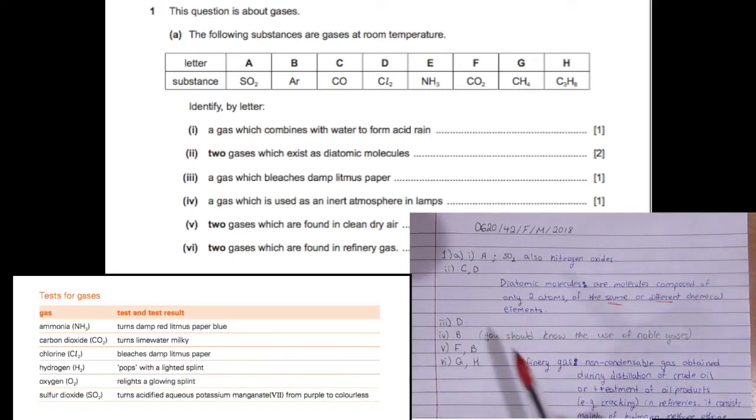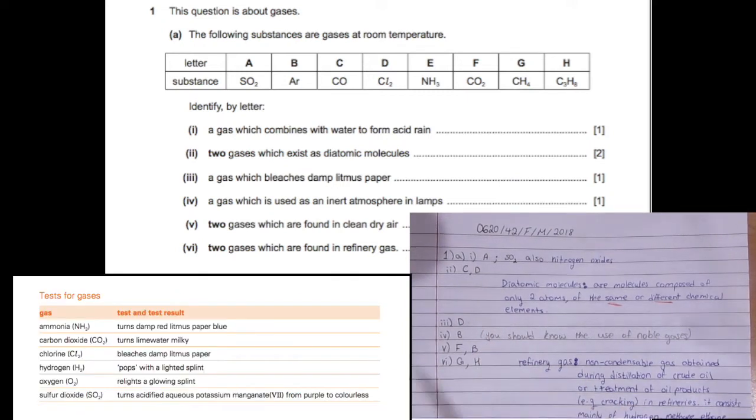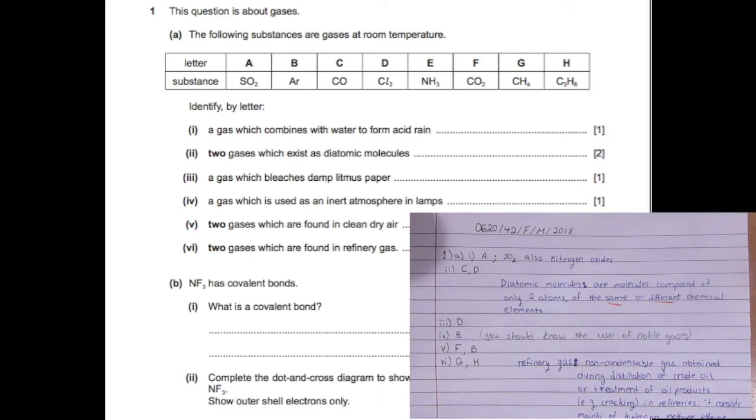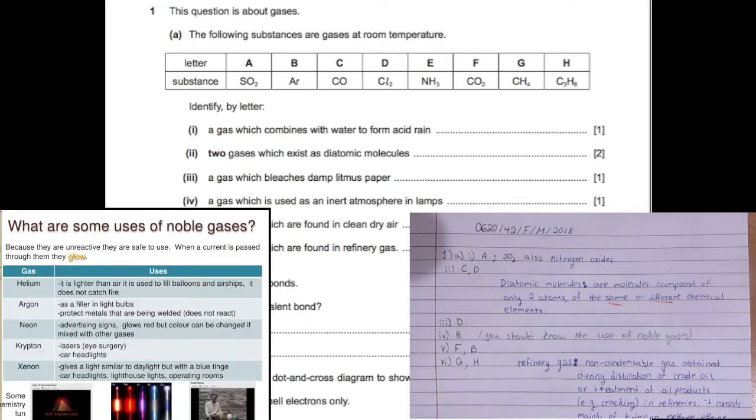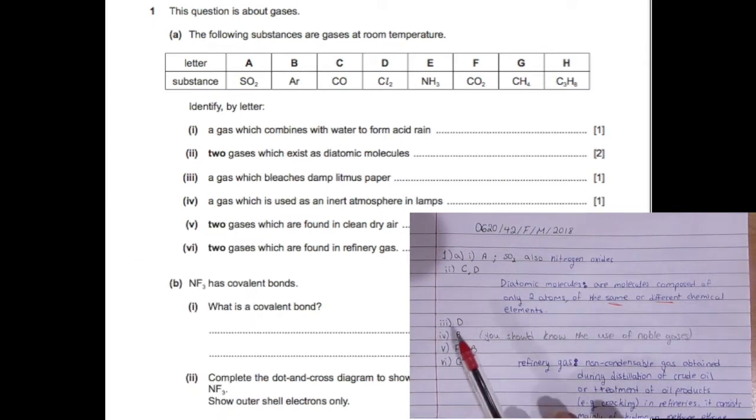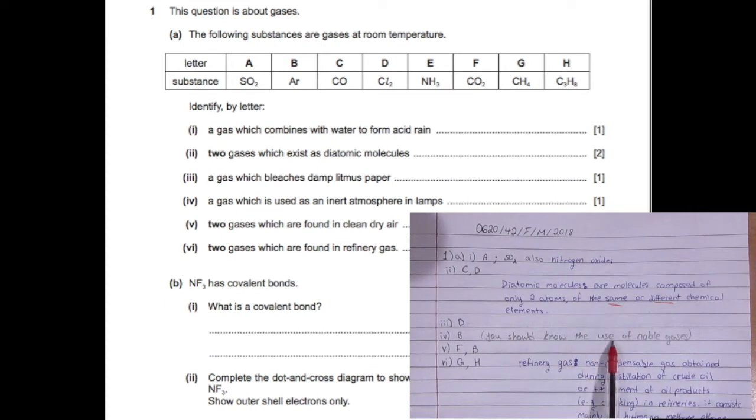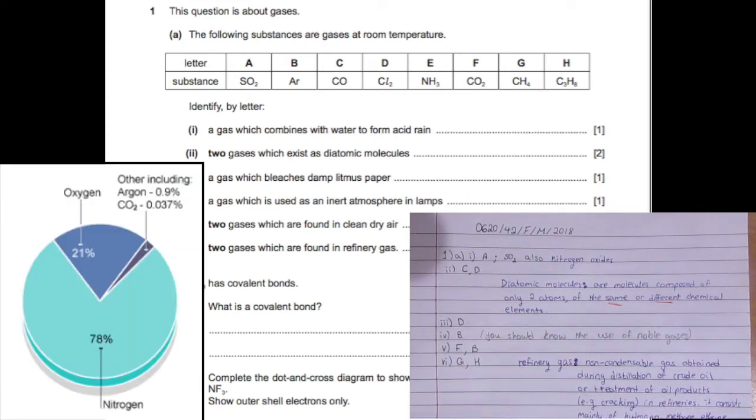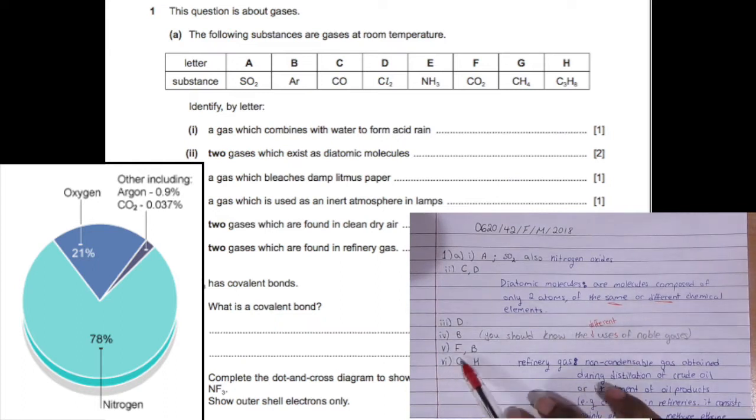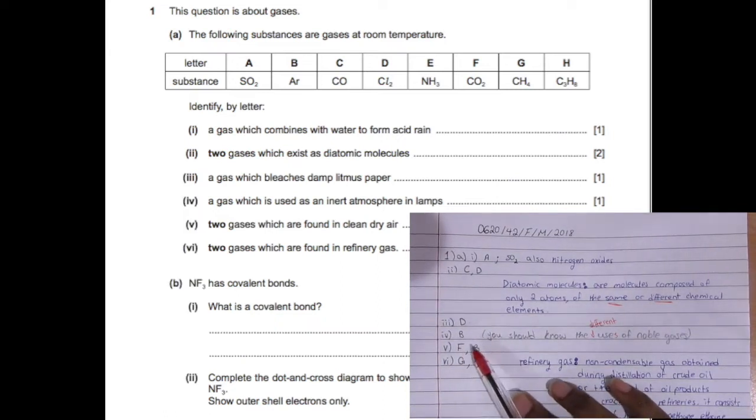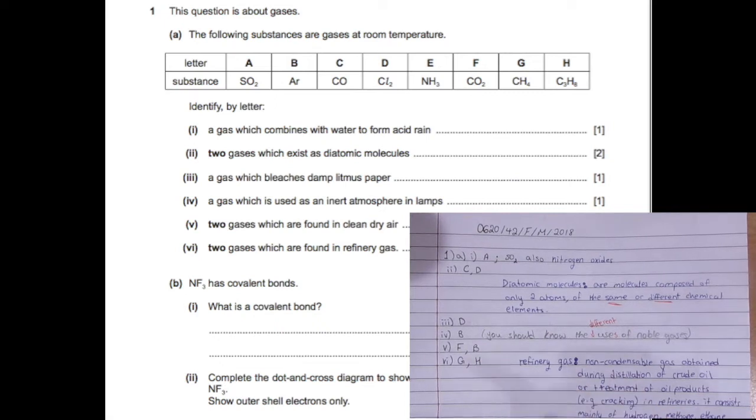A gas which bleaches damp litmus paper, that is chlorine, and you can find it in your ions test in the syllabus. A gas which is used as an inert atmosphere in lamps, that is argon, which is a noble gas. Two gases which are found in clean dry air, that is carbon dioxide and argon.